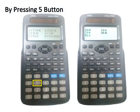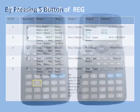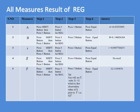By pressing button 5 you access the Regression screen, which shows five options: 1 is a for intercept, 2 is b for slope, 3 is r for coefficient of correlation, 4 is x-hat for predicted number of cases, and 5 is y-hat for predicted delivery time. We need the intercept (a), slope (b), coefficient of correlation (r), and predicted delivery time (y-hat).